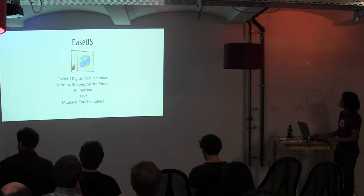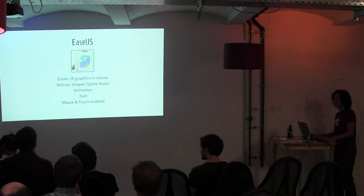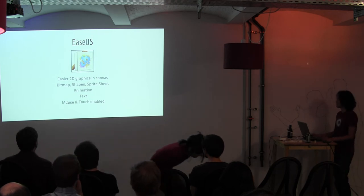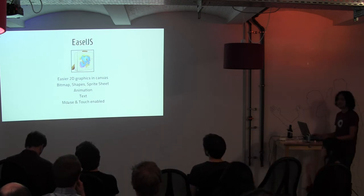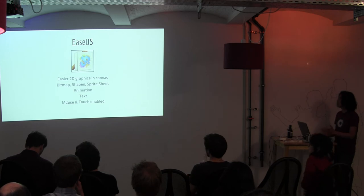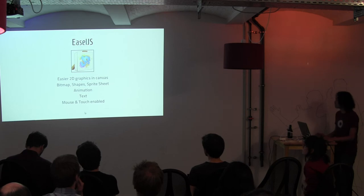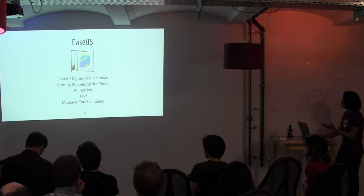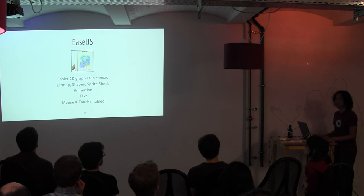Let's start with the first component — it's called Easel.js. This is the graphics component. It handles canvas easily for you. You can display bitmaps, create simple shapes, spritesheet animation, text, and it also handles mouse and touch.